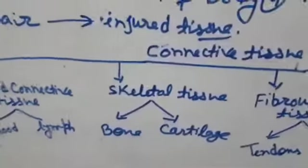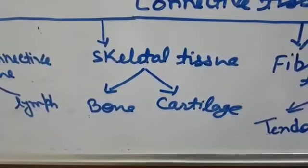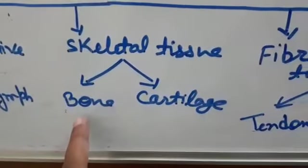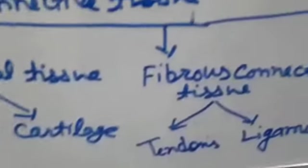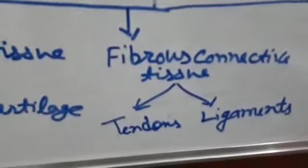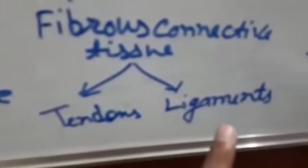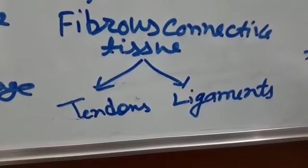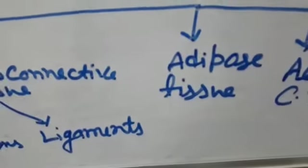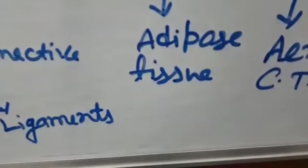The next is skeletal tissue, two types: bone and cartilage. Next is fibrous connective tissue, two types: tendons and ligaments. And the third one is adipose tissue or fatty tissue, in which fat deposits.